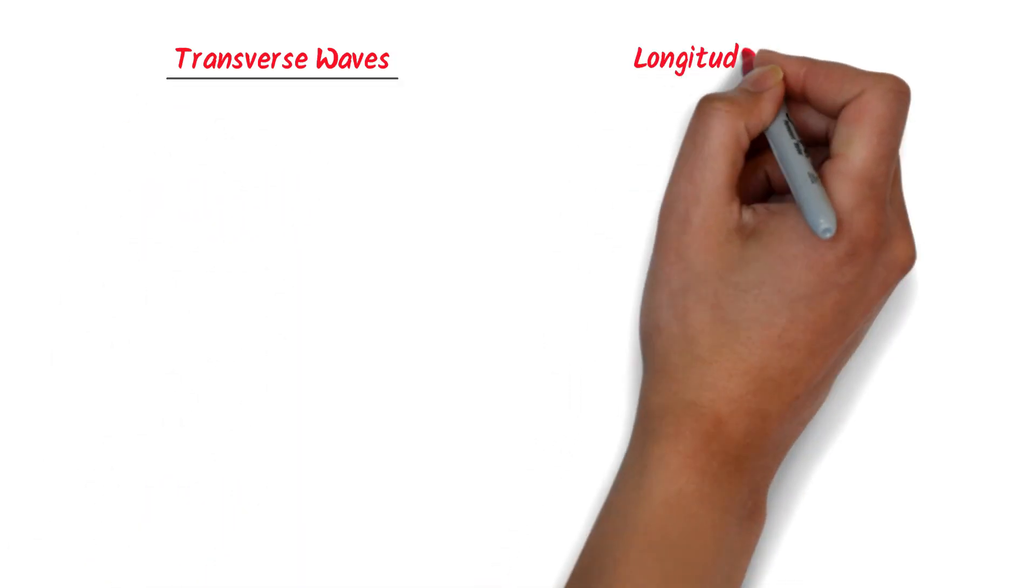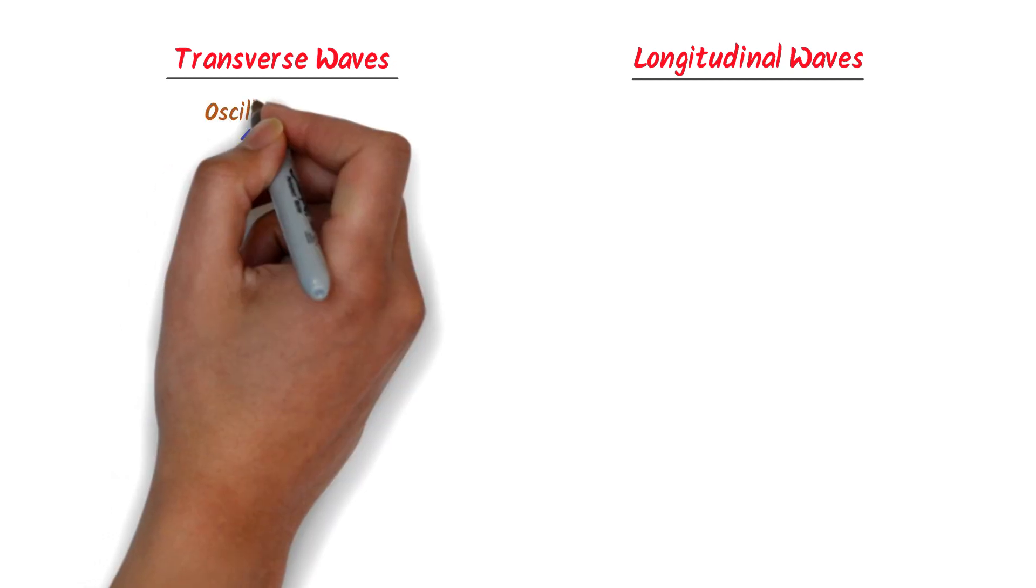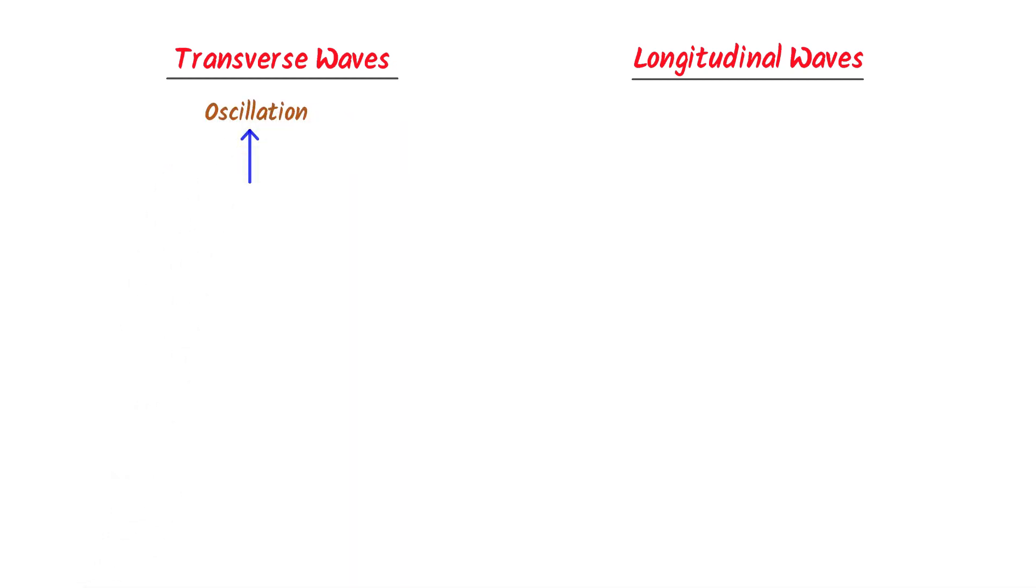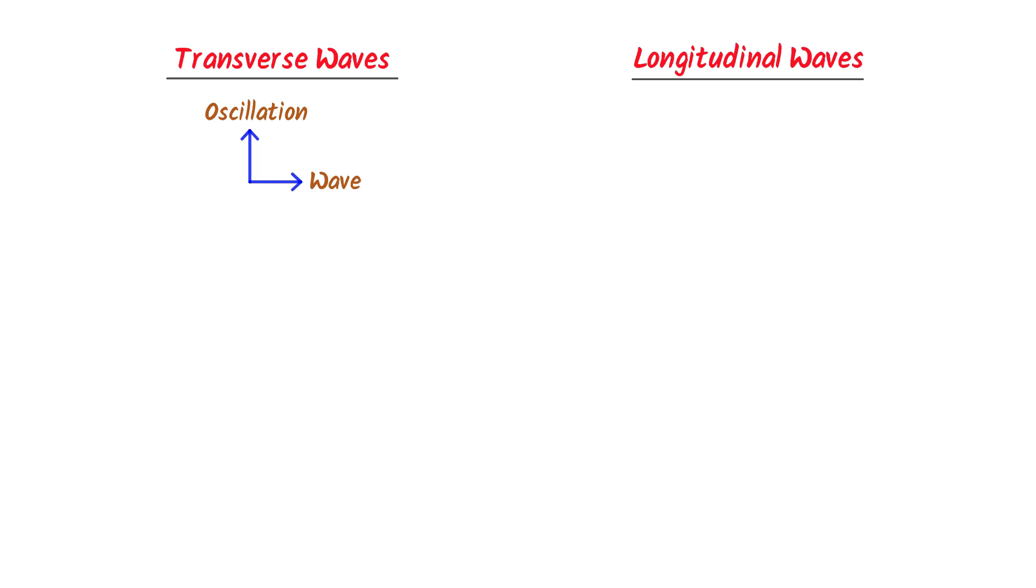What is the difference between transverse and longitudinal waves? When the direction of oscillation of particles is at the y-axis and the direction of wave motion is at the x-axis, such wave is called a transverse wave. Or we say that oscillation is perpendicular to wave motion.